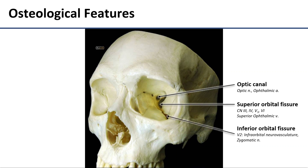If we follow this lowest point of the superior orbital fissure inferiorly, we find the inferior orbital fissure in pretty close approximation. This fissure opens from the floor of the orbit, and it transmits branches of the maxillary division of the trigeminal nerve — that's the infraorbital nerve and zygomatic nerve. The infraorbital artery and vein will also pass through here, traveling with the nerve. Unlike most of the structures passing through these foramina, the infraorbital nerve, artery, and vein are going to continue anteriorly into the maxilla, and will eventually come out on the face rather than staying in the orbit.